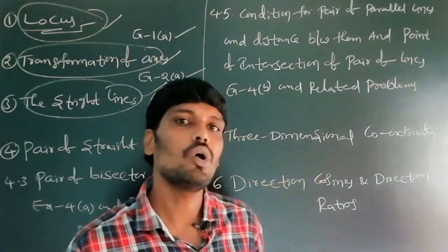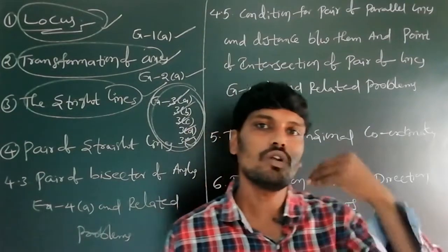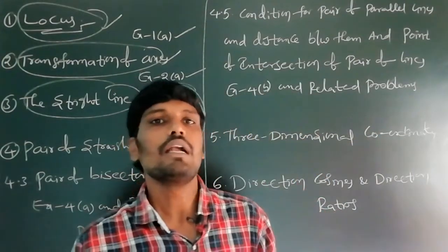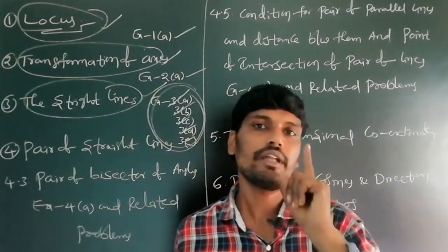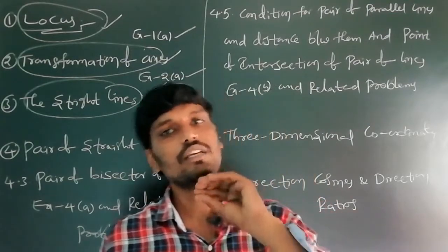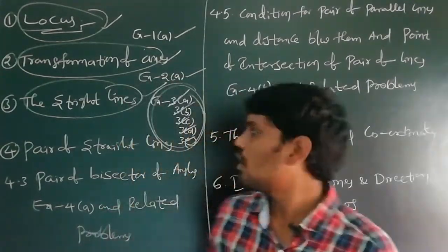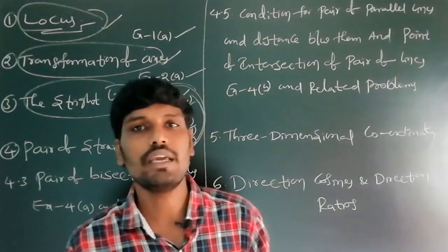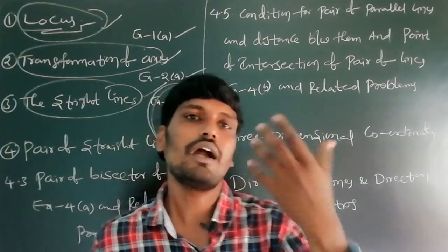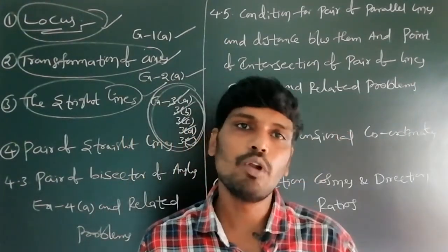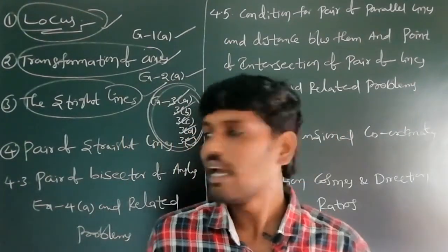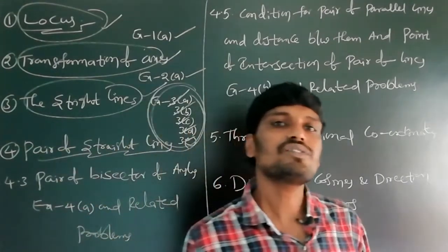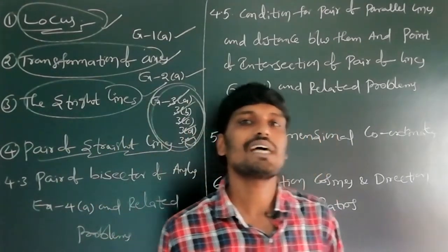In the IP examination, in Locus (1B), one exercise is coming. The next chapter is Pair of Straight Lines (Sarala Reka Yugmal).